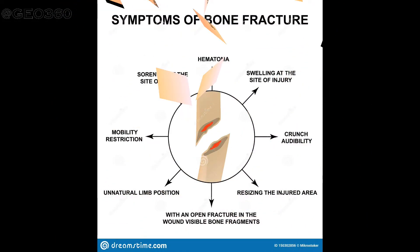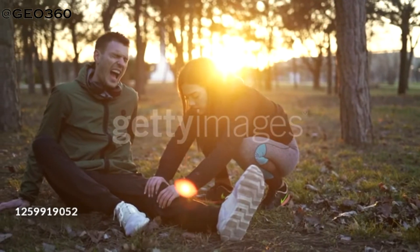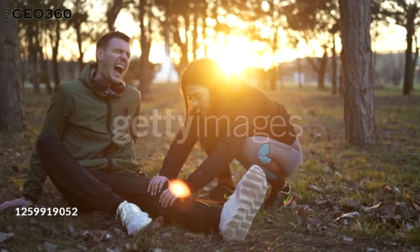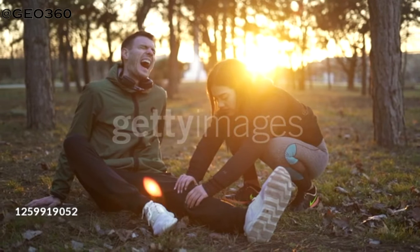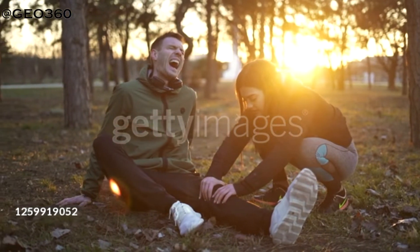There might be bleeding at the location of the fracture, the bone might be sticking out, and there might be a dislocation in the area of the fracture. The injured may have lost normal movement of the affected part, and there might be a deformity of the affected limb. If you are not sure whether the bone is broken or not, it is safer to assume that the bone is broken.